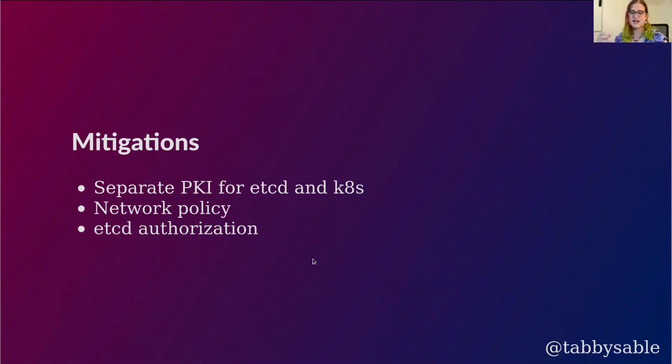What have we learned and how can we mitigate this? It's really critical to have separate PKIs for your etcd cluster and for your Kubernetes API server. Additionally, you can use network policy — either with a firewall, cloud provider ACLs, or Kubernetes network policy — to restrict who can even communicate with the etcd port. And if you like, you can enable etcd authorization. Using etcd authorization is a relatively uncommon configuration, so definitely test it first — but it can mitigate some of the hazard that comes from having a shared PKI. It's really best to have separate PKIs.